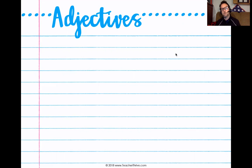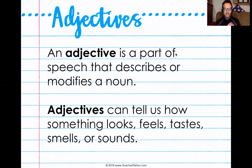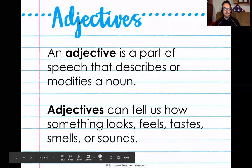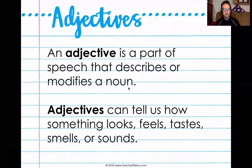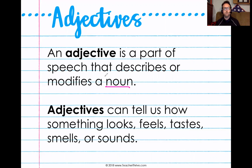Today we're going to talk about another type of word whose job within a sentence is also to modify, to add a little extra flair, extra flavor — and that is an adjective. An adjective is a part of speech that describes or modifies a noun. That's important because in order for something to be considered an adjective, it's going to modify a noun, not a verb, not something else.